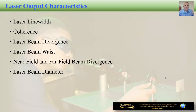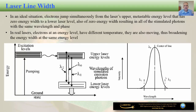Now that we know how lasers operate and their most important parts, let's look at what type of output lasers produce. Obviously there will be a laser beam with certain characteristics. We want to analyze the laser beam from the perspective of laser line width, coherence, laser beam divergence, beam waist, near field and far field beam divergence, and finally beam diameter.